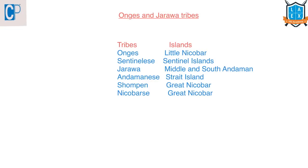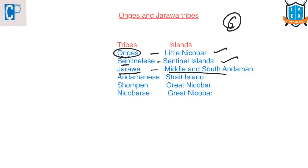We should know about the Onge and Jarawa tribes mentioned in this article. There are six aboriginal tribes in the Andaman and Nicobar Islands. The Onge tribe belongs to Little Nicobar. The Sentinelese tribe belongs to Sentinel Islands. The Jarawa tribe belongs to Middle and South Andaman. The Andamanese tribes belong to Strait Island. The Shompen tribes belong to Great Nicobar, and Nicobarese also belong to Great Nicobar.